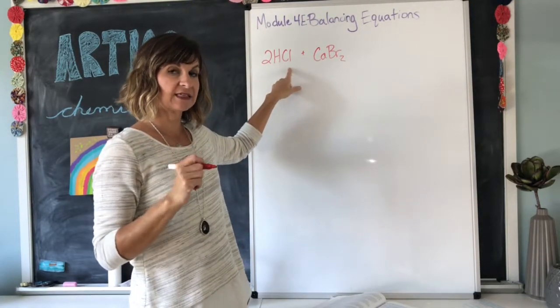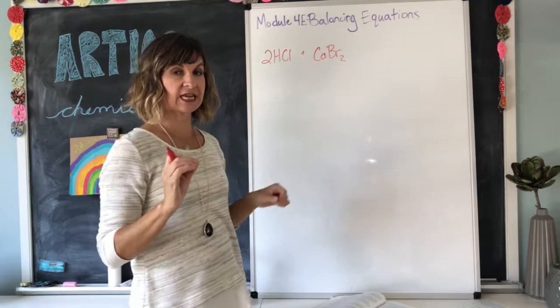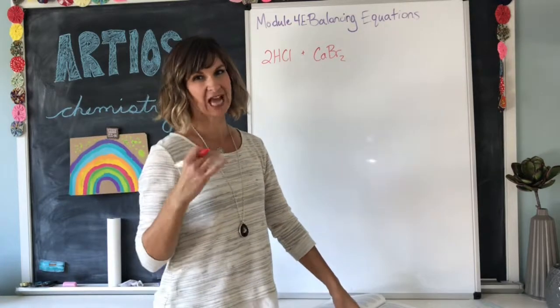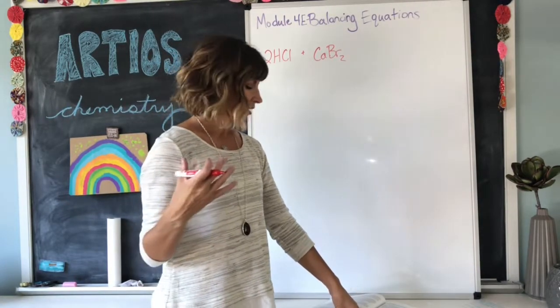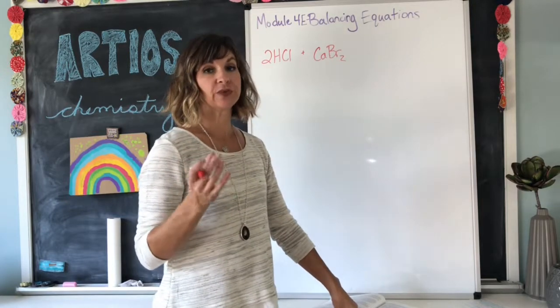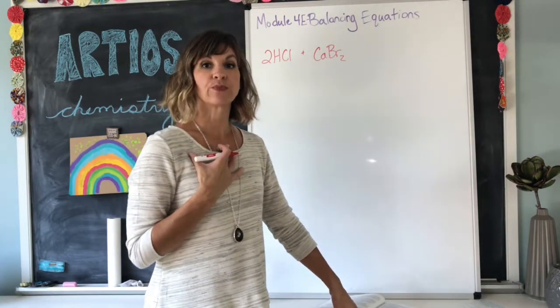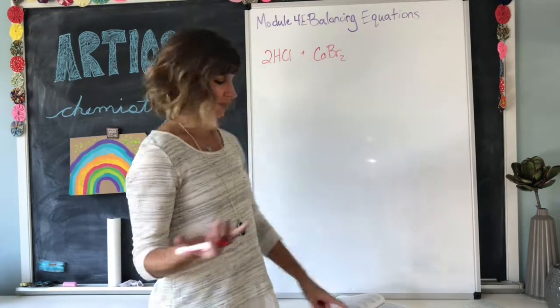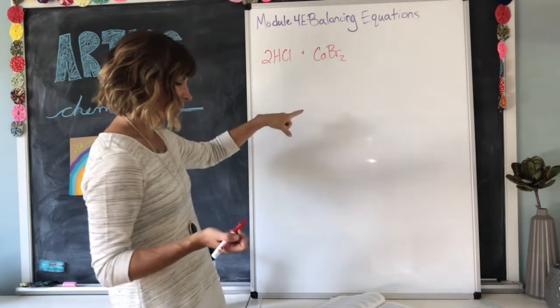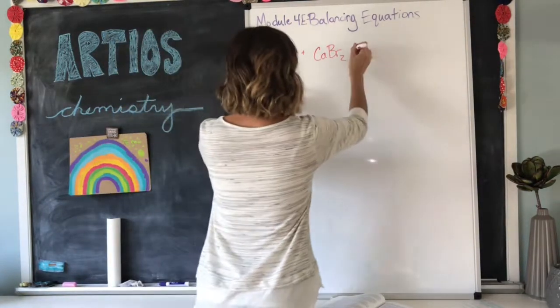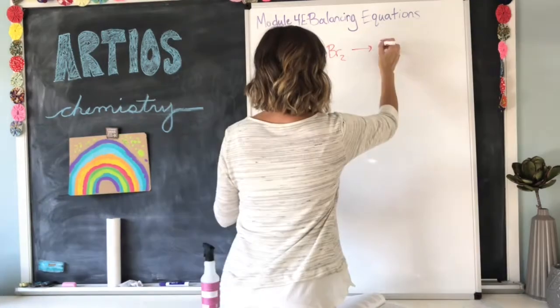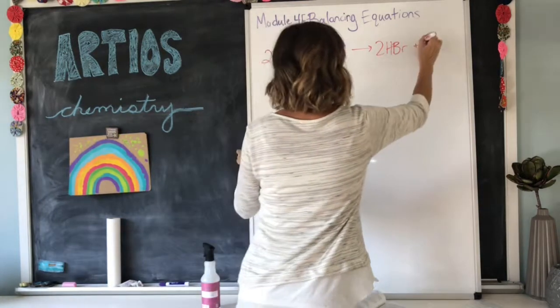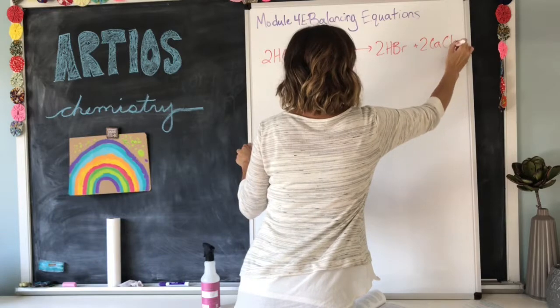Now, also in your book, you're going to see that the chemical equations include the state of matter that the compound is in. For example, after HCl, it says AQ, which means aqueous, which means it's dissolved in water. You don't have to include those states of matter for me. 2HCl plus CaBr2 yields 2HBr plus 2CaCl2.